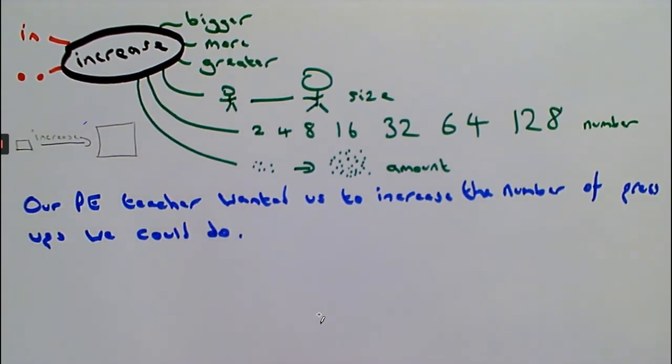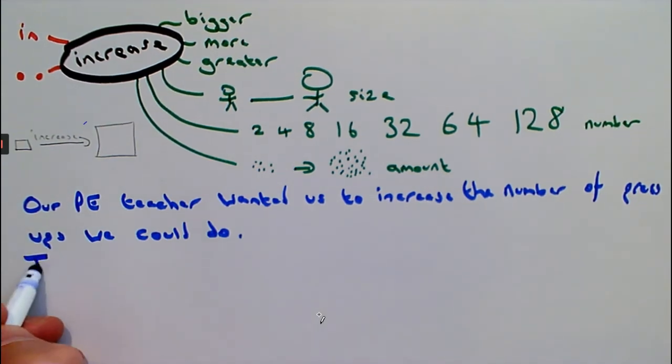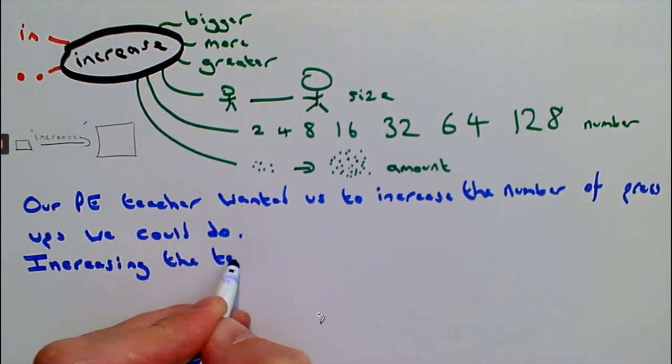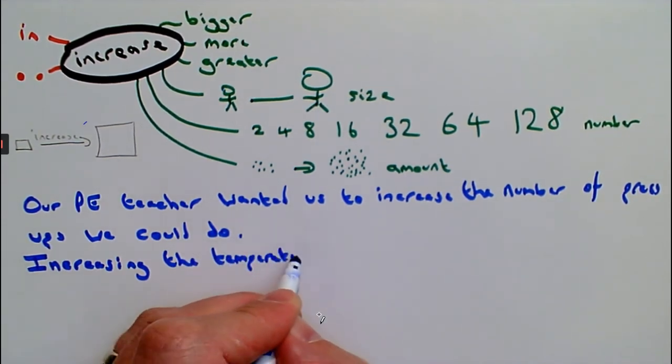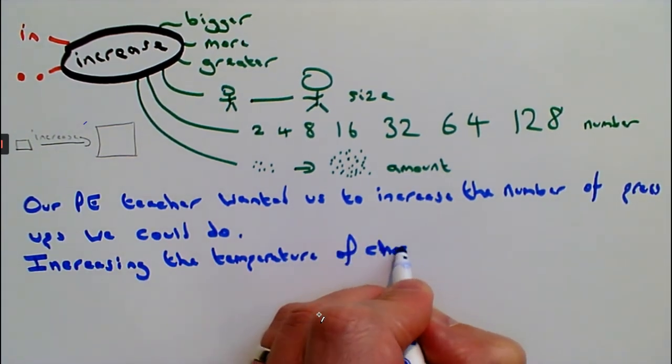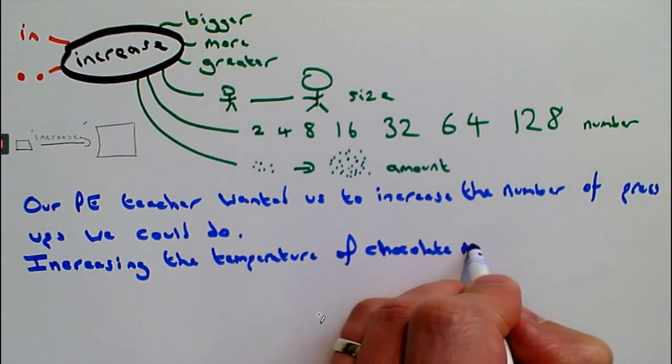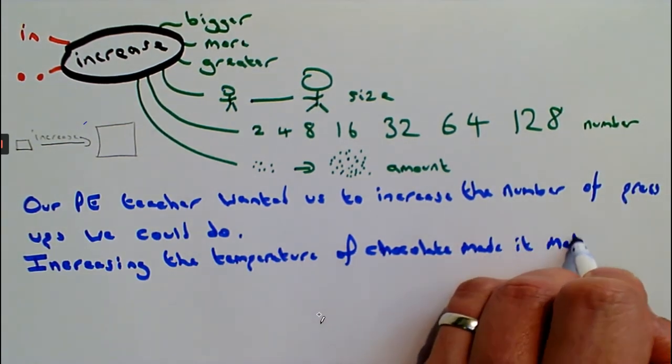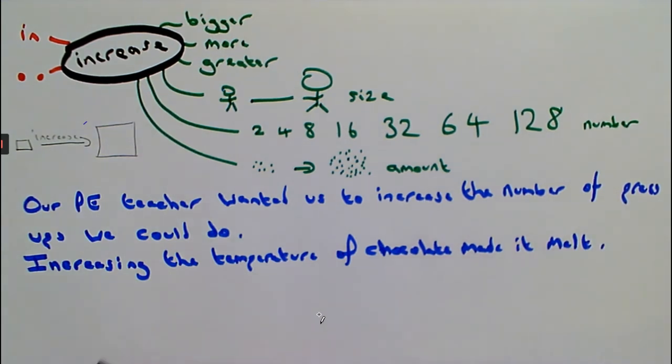We'd also talk about increases in science and maybe cookery. Maybe in cooking, you might find that increasing the temperature of chocolate made it melt. So in cookery, increasing the temperature of chocolate, heating it up, increasing the temperature, made it melt.